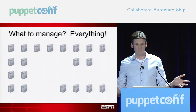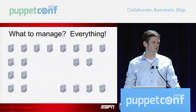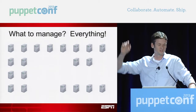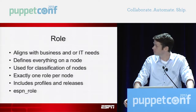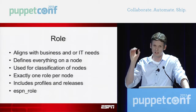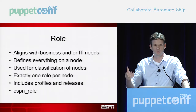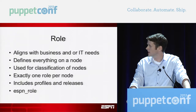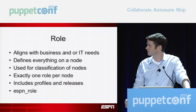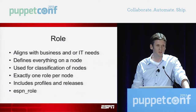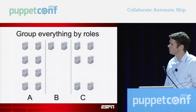In our environment, what do we want to manage? Everything — we're not doing a specific project or a certain cluster of nodes. We want to manage every single Linux server within the ESPN environment. Then we have this concept of role. A role aligns with our business or IT needs — this box is this role, that box is that role. The role ends up defining everything on a node: just give a box its role and all the configurations are laid down. There is exactly one role per node, and that role includes profiles and releases. If you're familiar with the profile and role pattern, this is exactly that — we've added a twist with our releases.